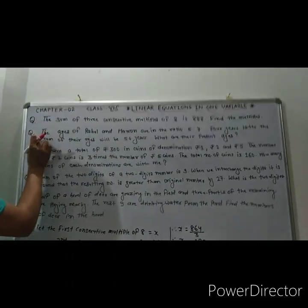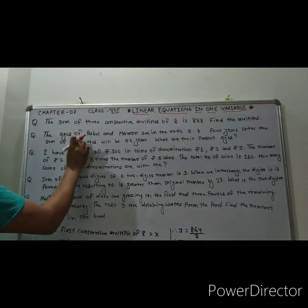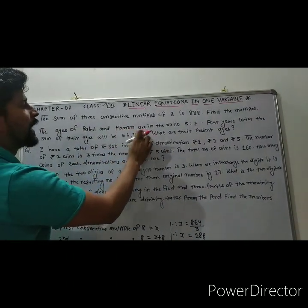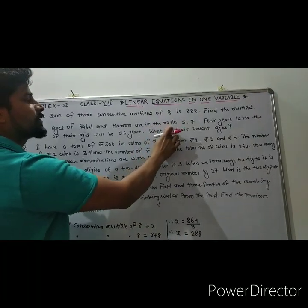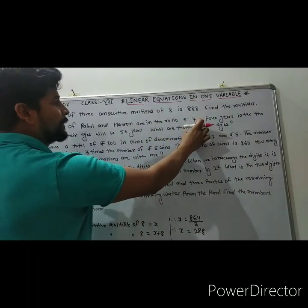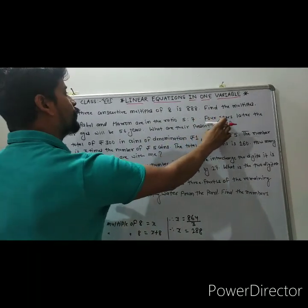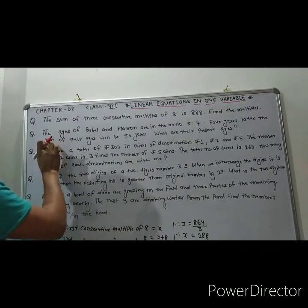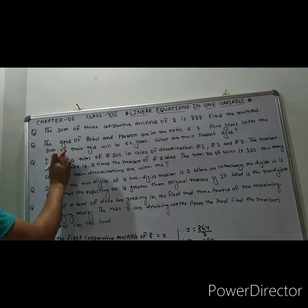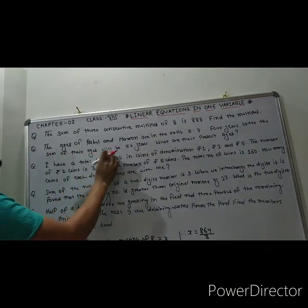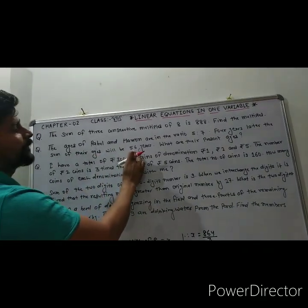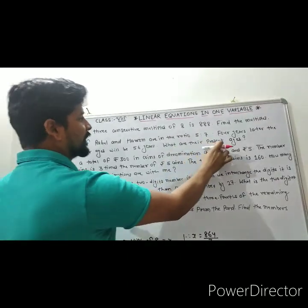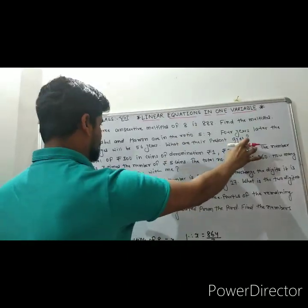Question number 2: The ages of Rahul and Haroon are in the ratio 5 is to 7. Four years later, the sum of their ages will be 56 years. What are their present ages?